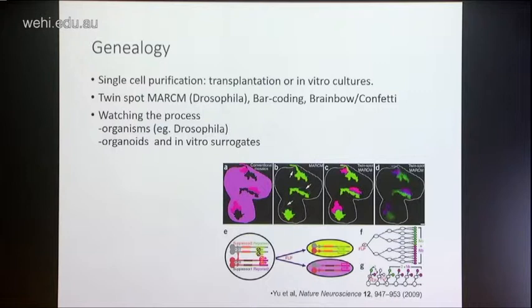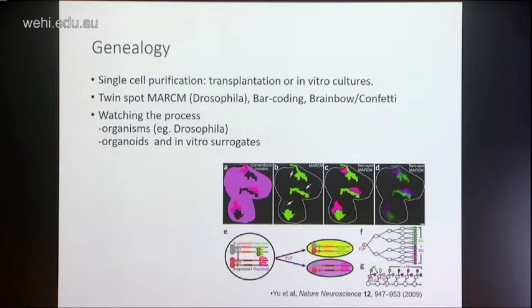That's all been very useful — the cataloguing idea for understanding what fate decisions are made. The other thing that's becoming more and more valuable in understanding differentiation is what I overall term genealogy — understanding the ancestry of cells to better understand how they differentiate. There's been a huge amount of work done using single-cell purification approaches where you transplant cells, for instance a stem cell, and see what it can give rise to. That's a wonderful tool that has really transformed our understanding.